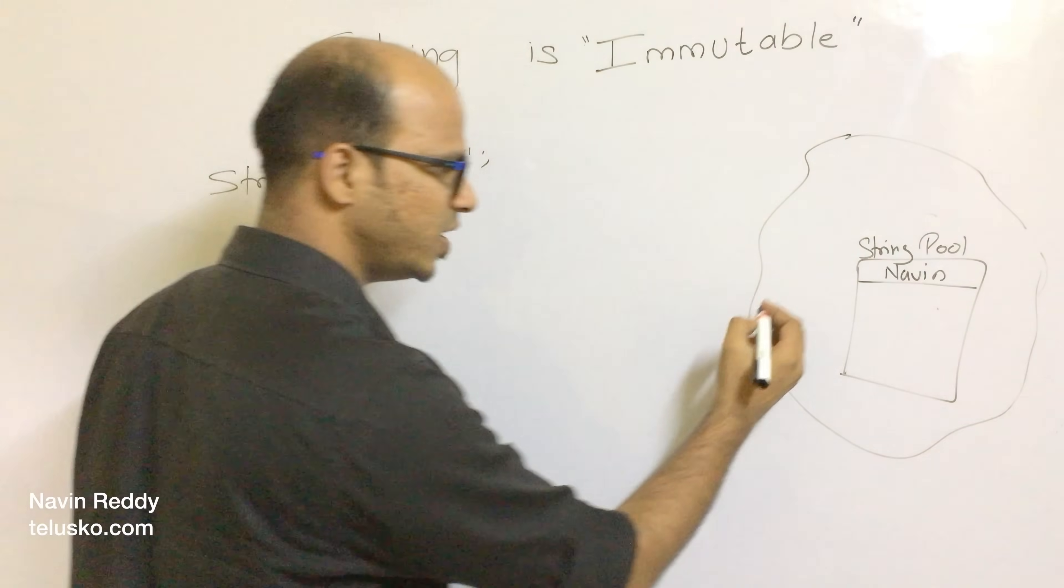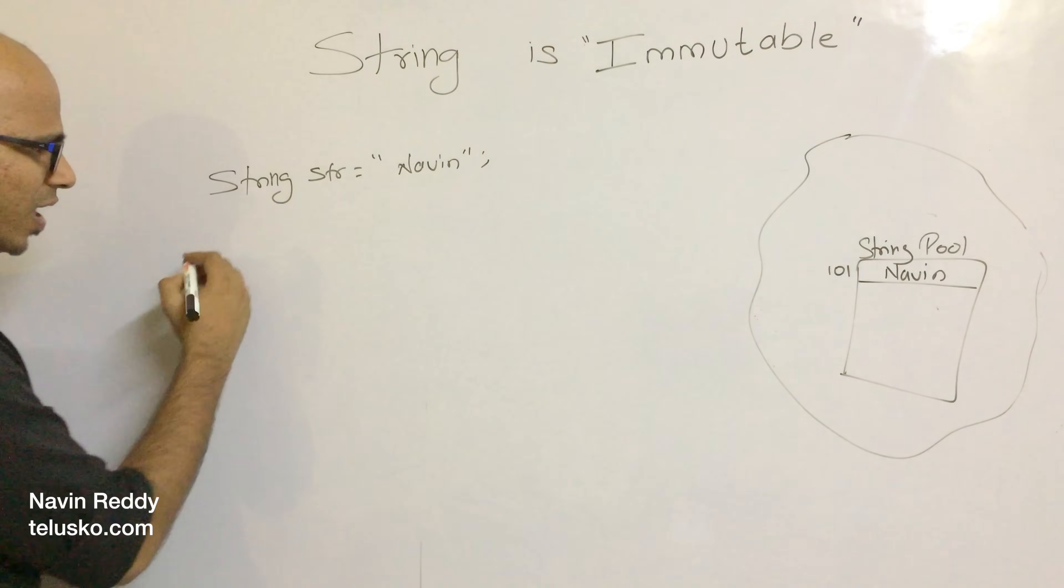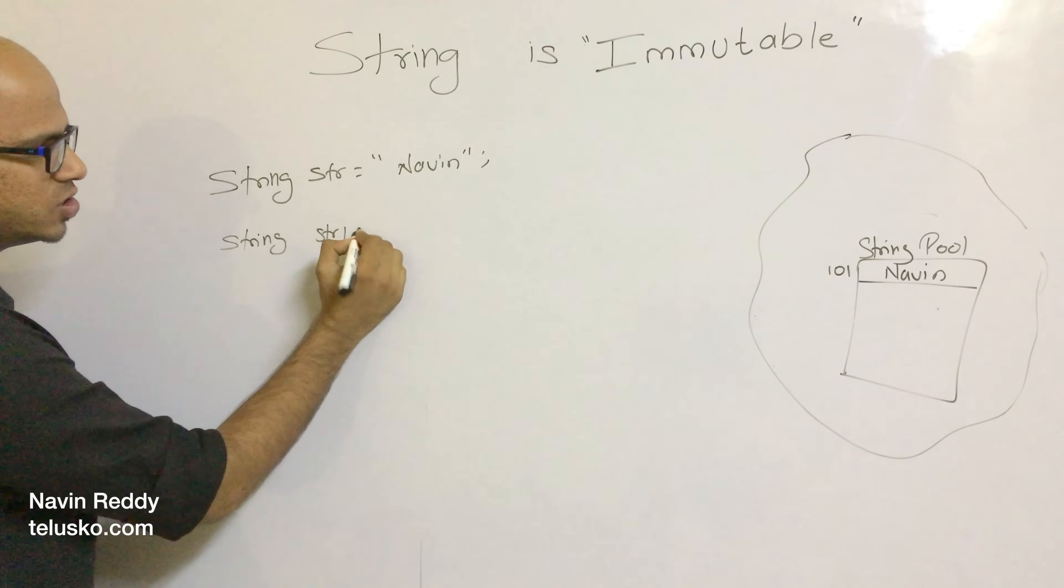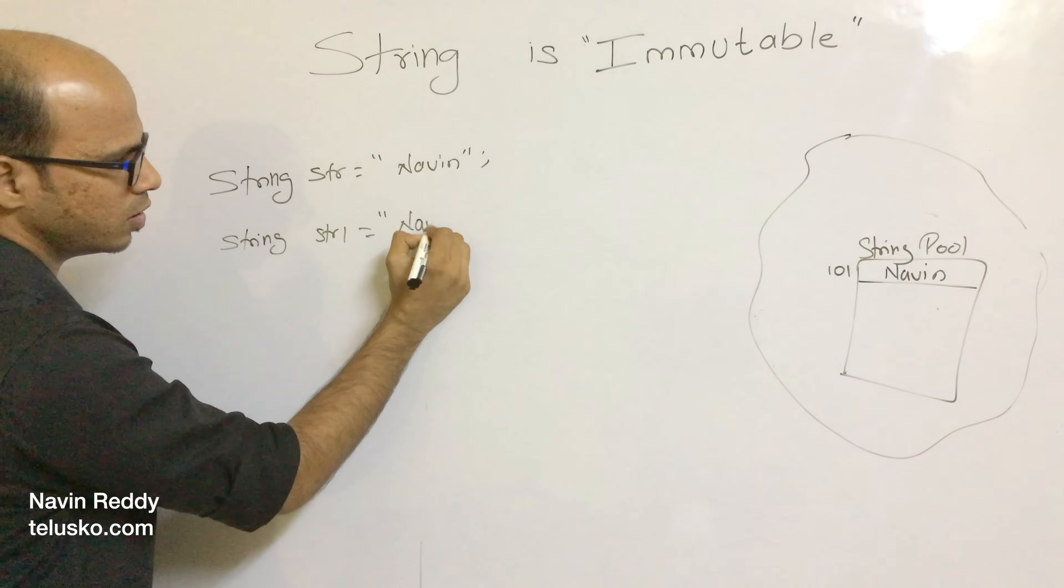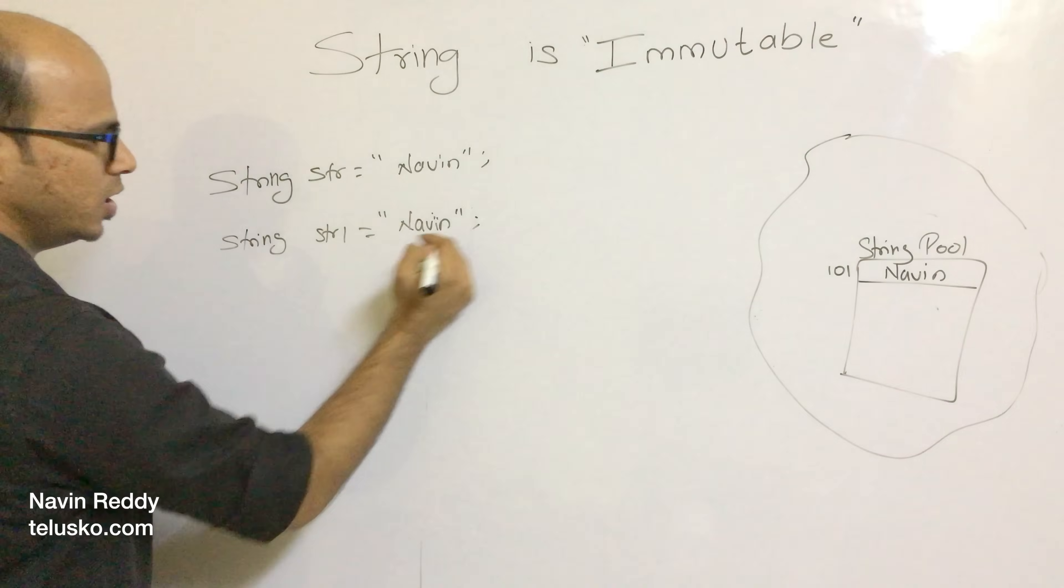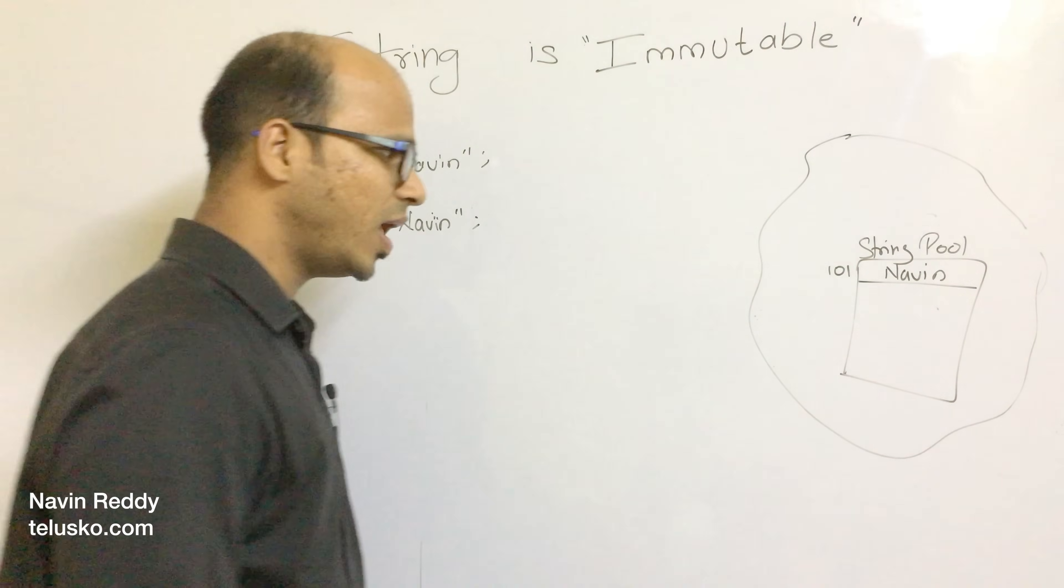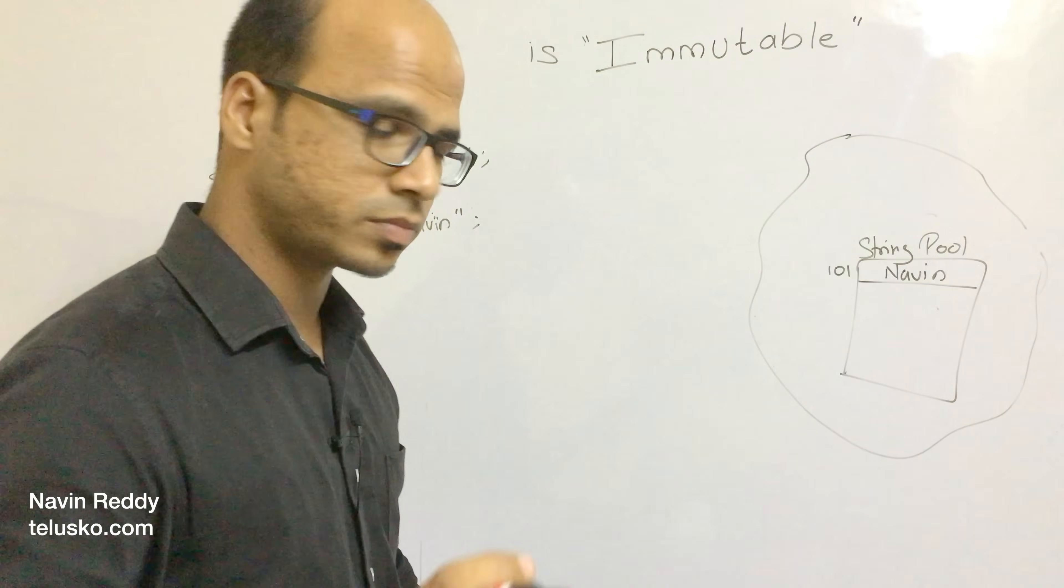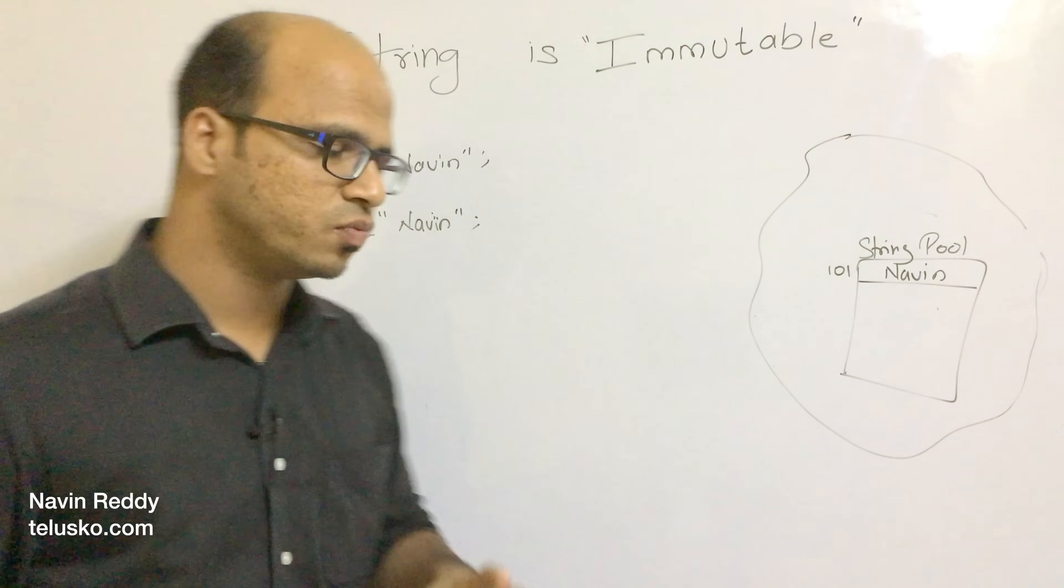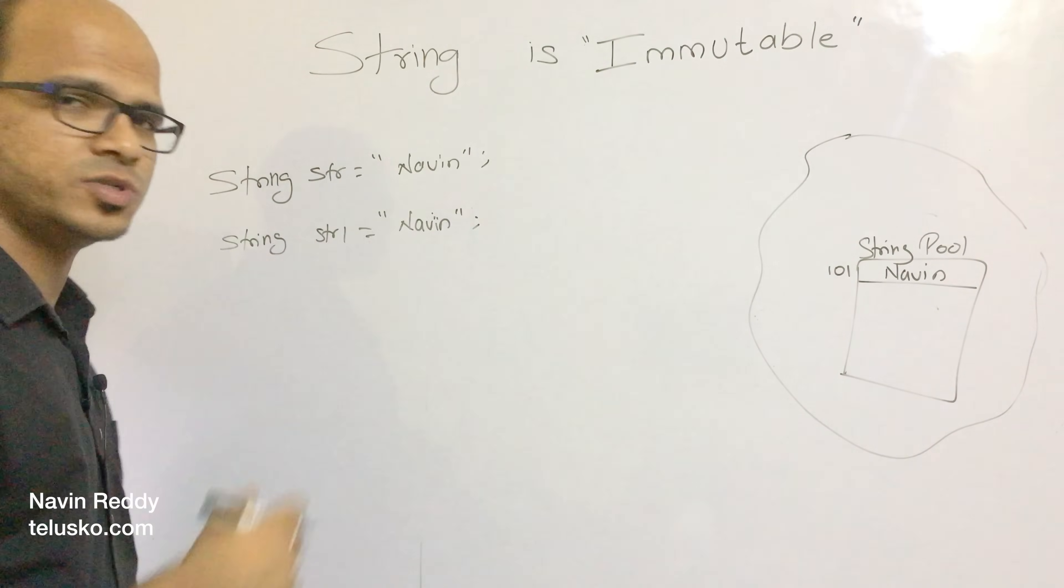This Naveen will have a unique address, let's name it 101. Now what will happen if I create a new variable as string STR1 equals Naveen? It will not create a new object. Inside your string pool, since we already have Naveen, it will not create a new object. Both of these will refer to the same object.